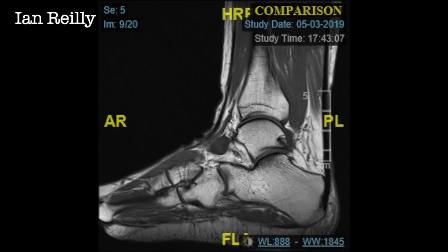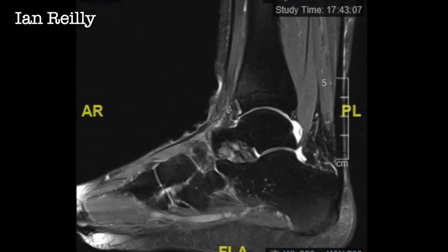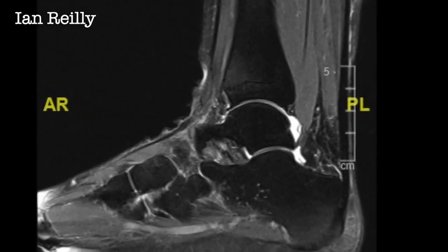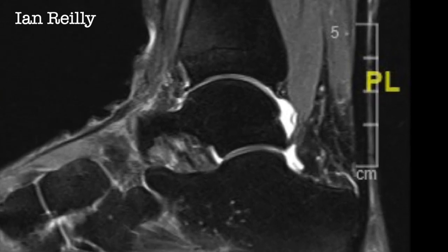Here are our T1 and T2 MRI images. Note there's a slight talar defect to the back of the talus and a little bit of fluid at the back of the talus and the back of the posterior subtalar joint.